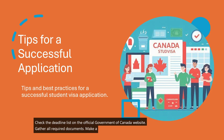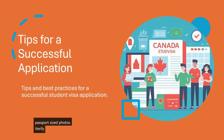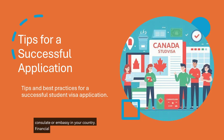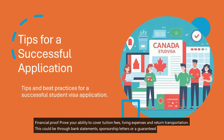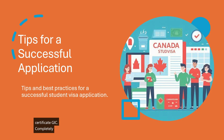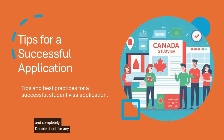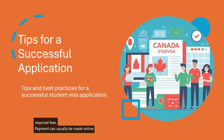Third, Gather All Required Documents: make a checklist of the necessary documents, which typically include a valid passport, letter of acceptance, proof of funds, visa application forms, and passport-sized photos. Verify specific requirements on the official immigration website or the website of the Canadian consulate in your country. Fourth, Financial Proof: prove your ability to cover tuition fees, living expenses, and return transportation — this can be through bank statements, sponsorship letters, or a Guaranteed Investment Certificate (GIC). Fifth, Complete the Application Form: fill out the appropriate study permit application form accurately and completely, and double-check for any errors or omissions. Sixth, Pay the Application Fee: pay the non-refundable visa application processing fee and any other required fees — payment can usually be made online, and it's essential to keep proof of payment.